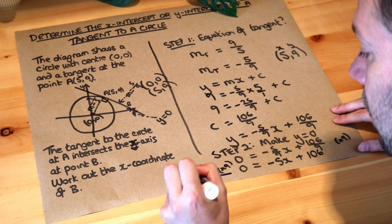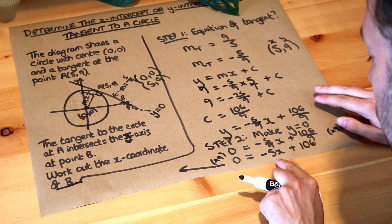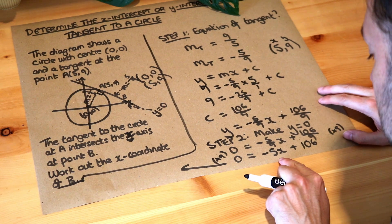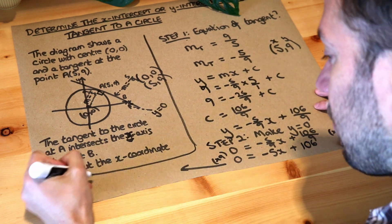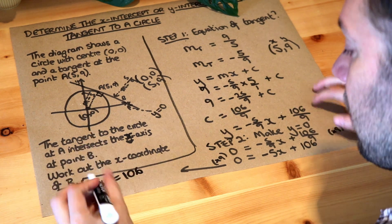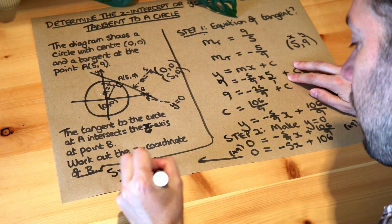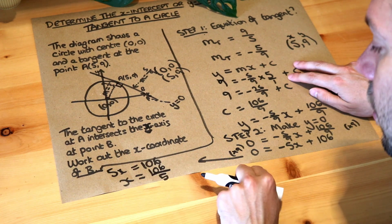And I'm just going to do it over here because I've run out of space. But what we can then do is we could add 5x to both sides, so we get 5x equals 106, and that means if we divide both sides by 5, x is 106 over 5, and that is the final answer.